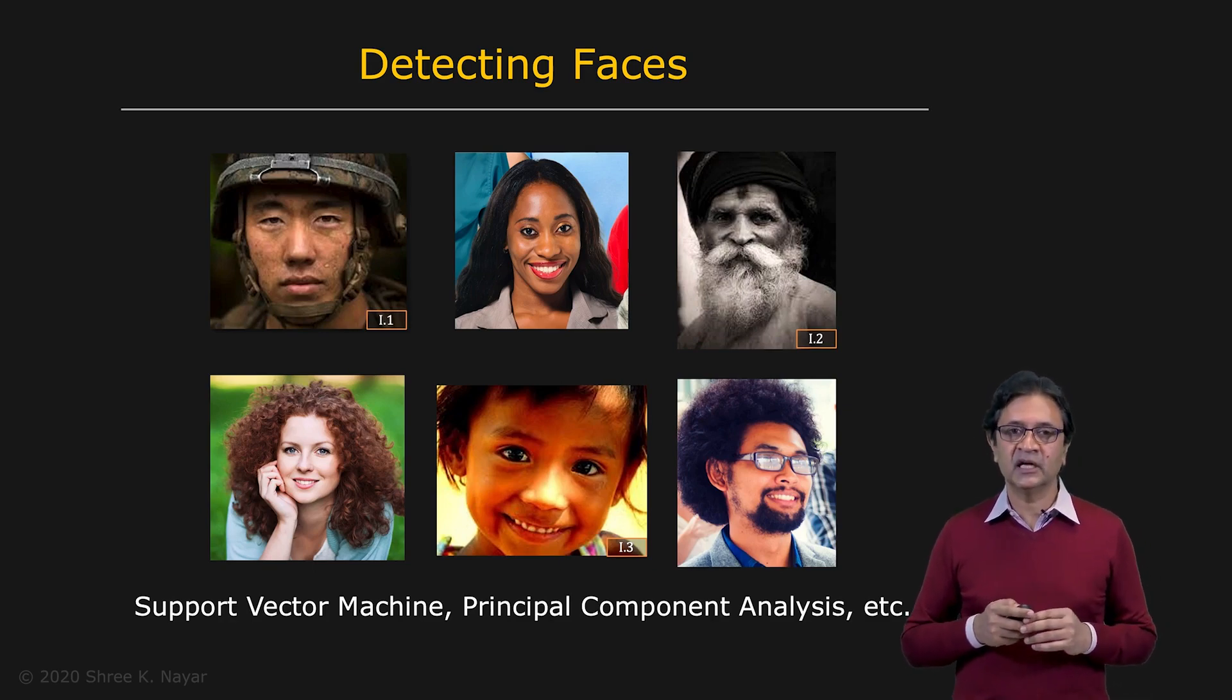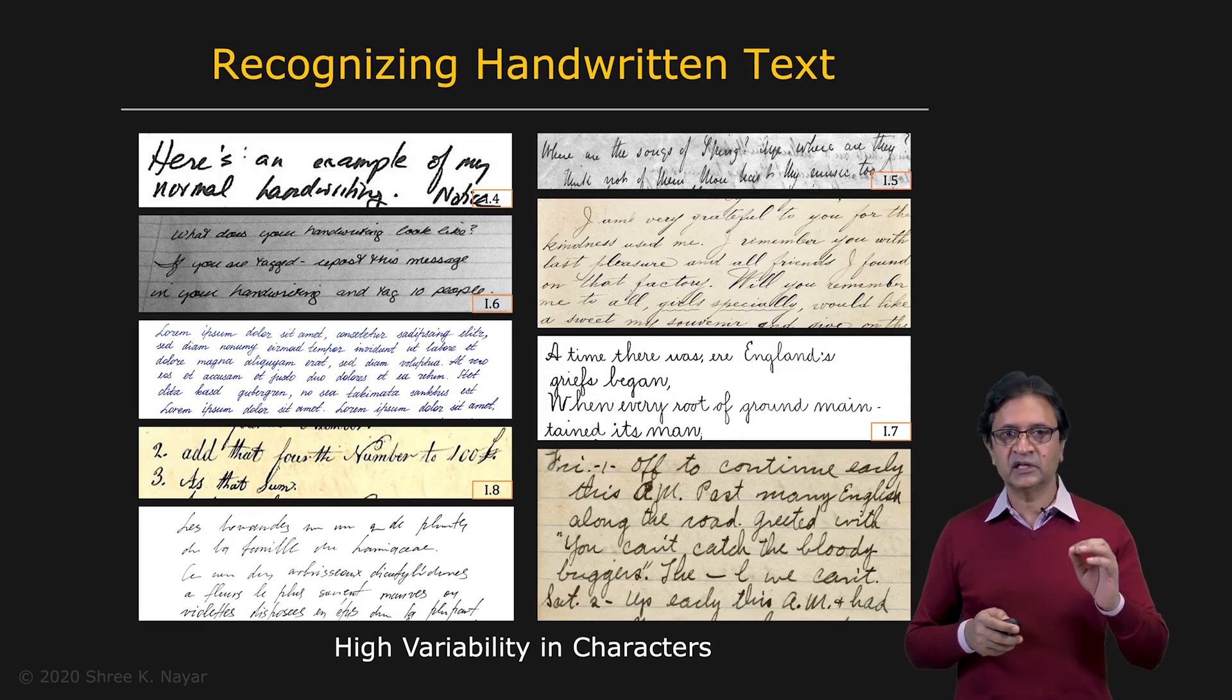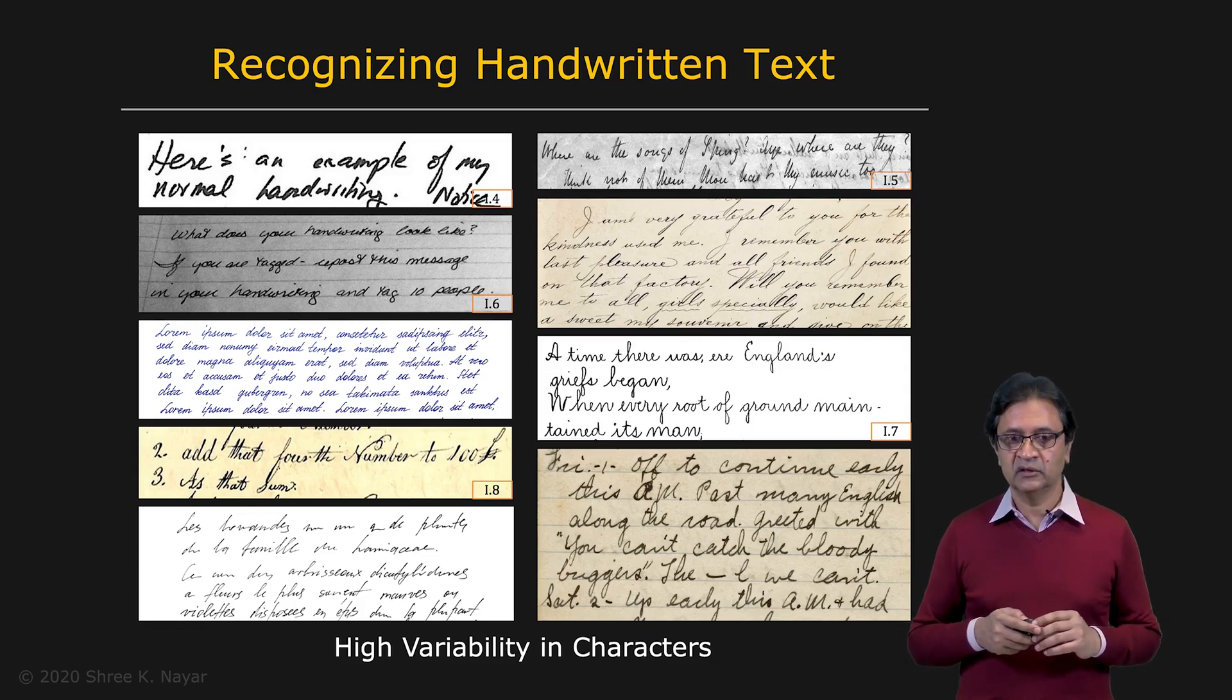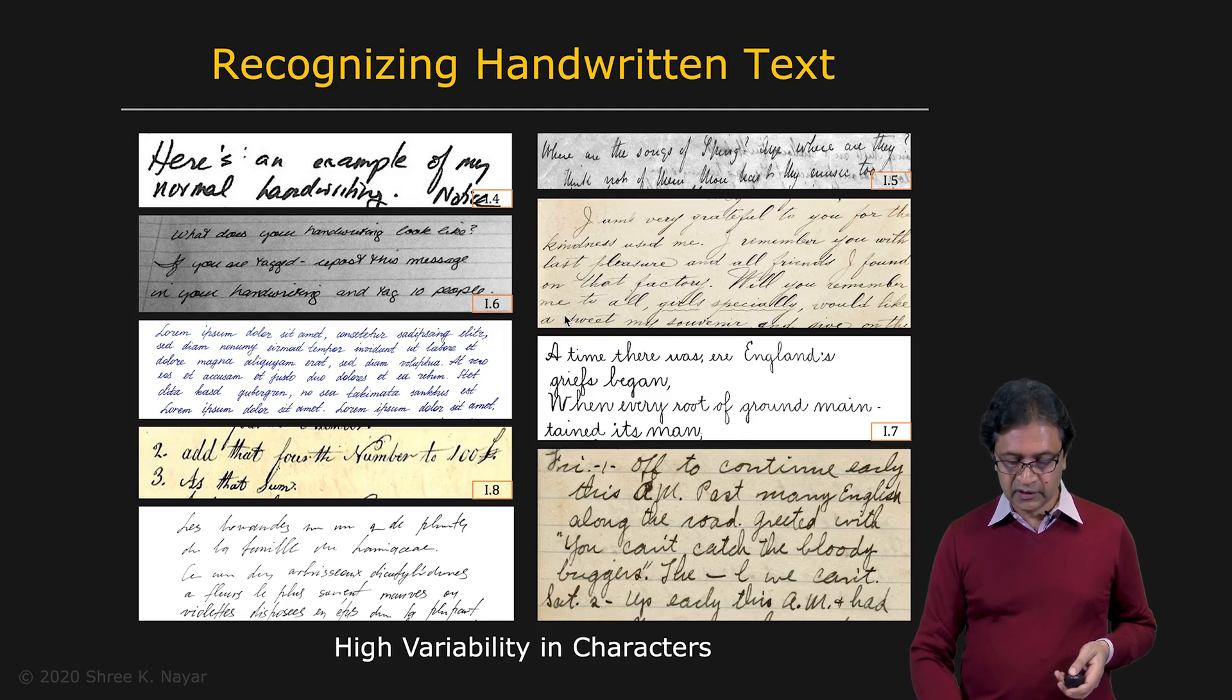Let's take a look at a more challenging problem, which is recognizing handwritten text. Here are various samples of handwritten text and there's tremendous variability here. If you take a look at a single letter, such as the letter T right here, you see that it appears very differently from one person to the next. A lot of variability.